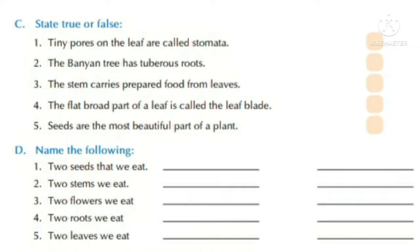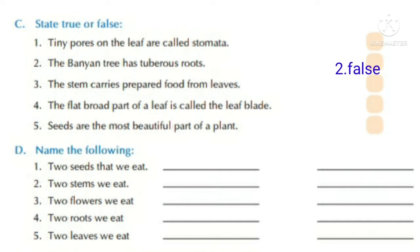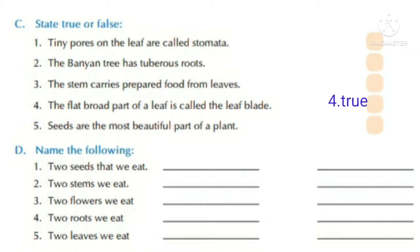Section C — State true or false. Number one: tiny pores on the leaves are called stomata — True. Number two: the banyan tree has citrus roots — False. Number three: the stem carries prepared food from leaves — True.